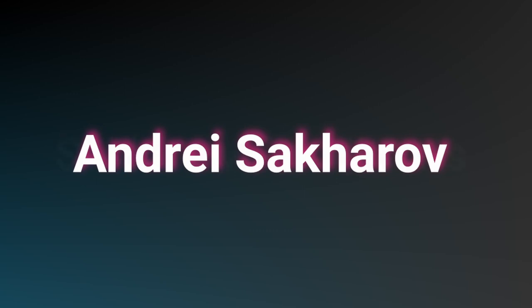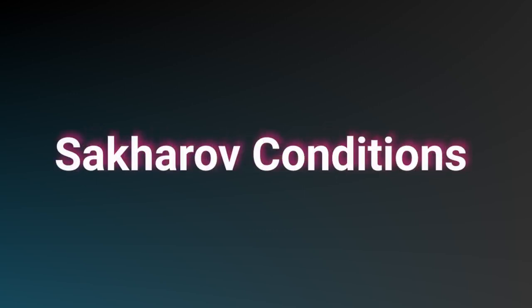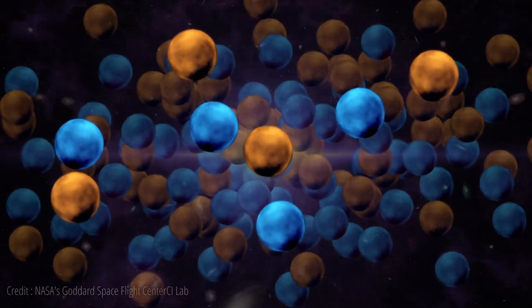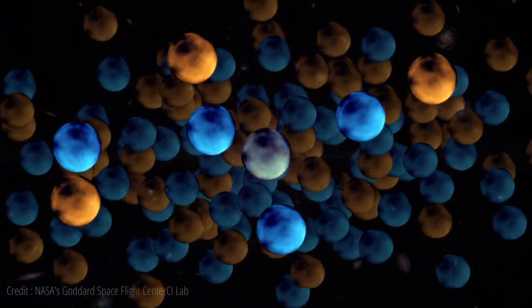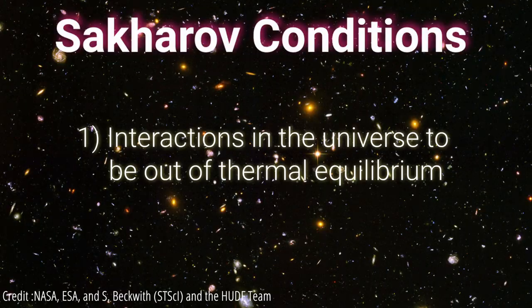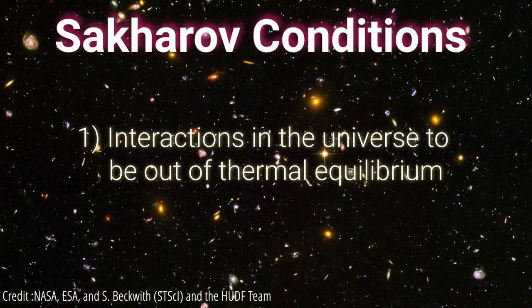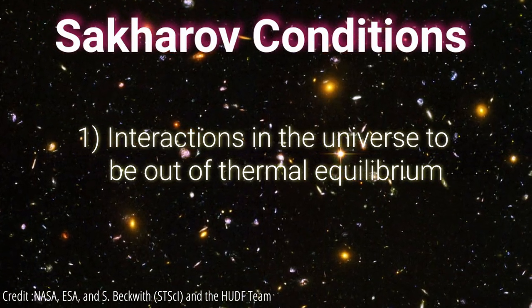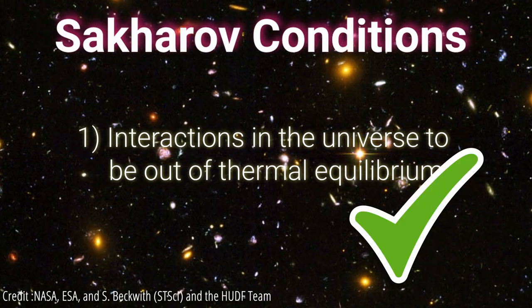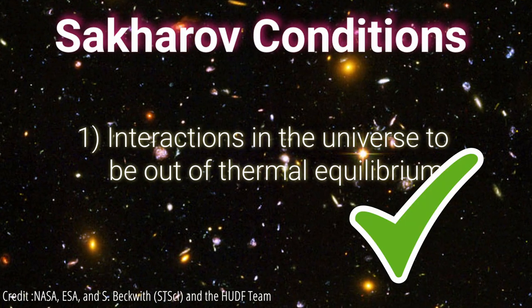In 1967, nuclear physicist Andrei Sakharov proposed three conditions that would be necessary to start with equal numbers of matter and antimatter but end up with more matter than antimatter. The first is that interactions in the universe must be out of thermal equilibrium — which our universe happily fulfills, so we don't have any problem there.